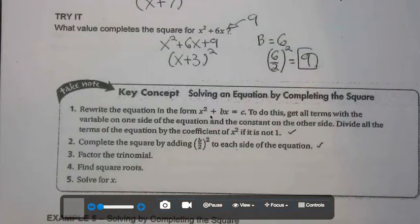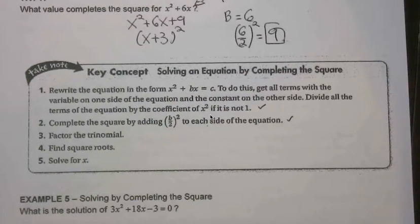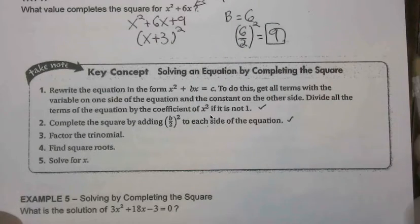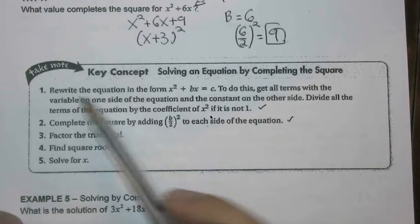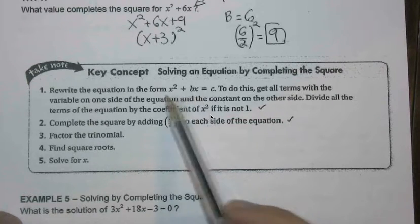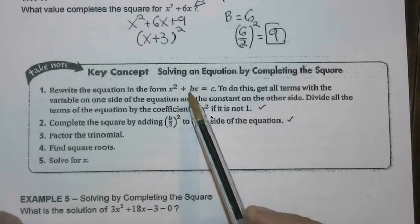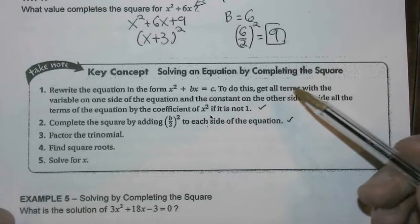In the previous video, we introduced the idea of adding in a constant that would help complete the square, meaning it would allow the left side of the equation to be rewritten to a perfect square trinomial, which from here on out is going to be our goal.